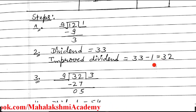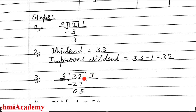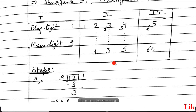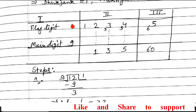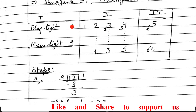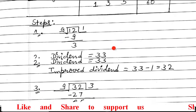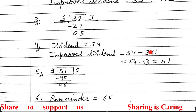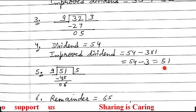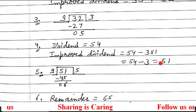Divide 32 by 9: 9×3=27, remainder 5. Quotient is 3 and remainder is 5. Enter in the table. New dividend is 54. Improved dividend: 54 minus 1×3 = 51. Since it is positive, you don't have to reduce it.